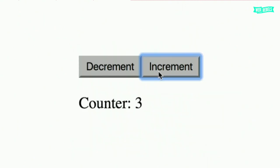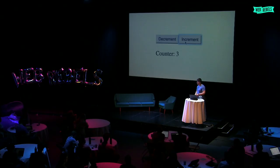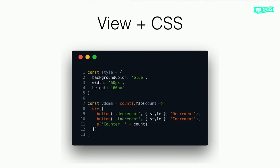It looks like this — simple. Behind the scenes the data just cycles around, and everything is just a stream — even the view is a stream. If you want to add CSS, that's also simple: just create a style object and put it as a second argument. This is actually coming from snabbDOM — it's CSS-in-JS. Just pass a style object, and you can pass other parameters inside that object too.